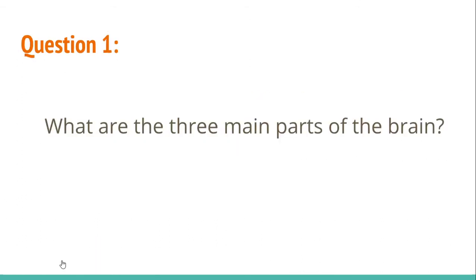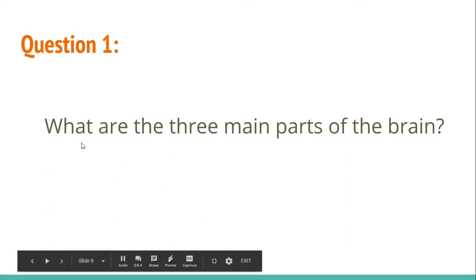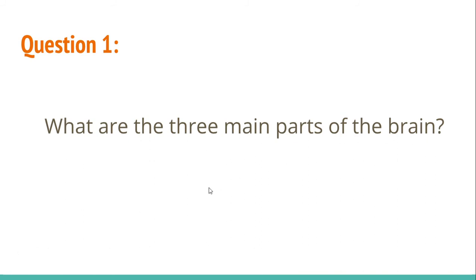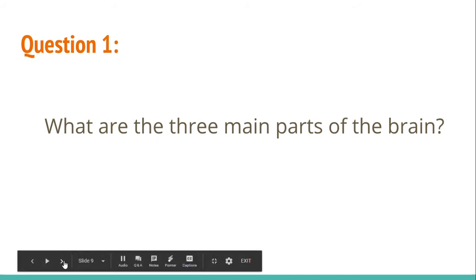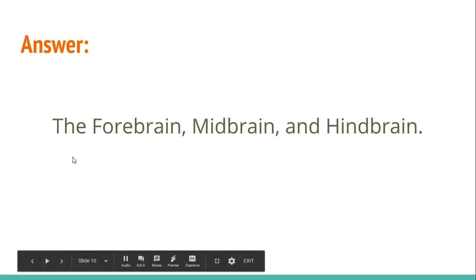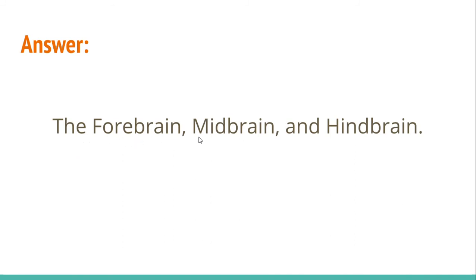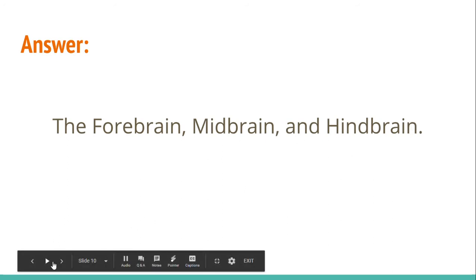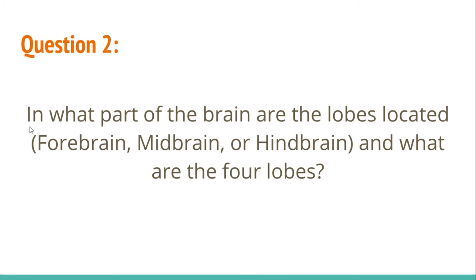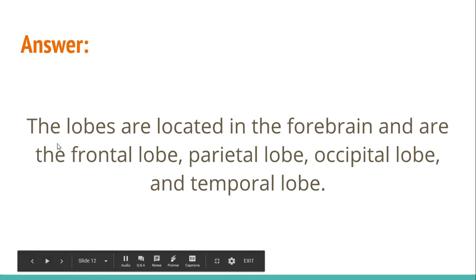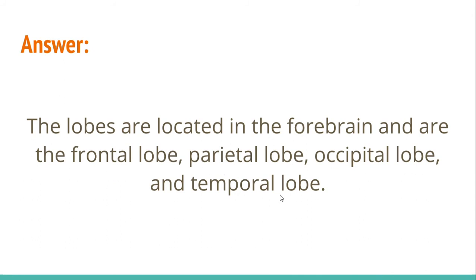Now let's have a little quiz. Question one: what are the three main parts of the brain? The answer is the forebrain, the midbrain, and the hindbrain. Question two: in what part of the brain are the lobes located — forebrain, midbrain, or hindbrain — and what are the four lobes? The lobes are located in the forebrain and are the frontal lobe, the parietal lobe, the occipital lobe, and the temporal lobe.